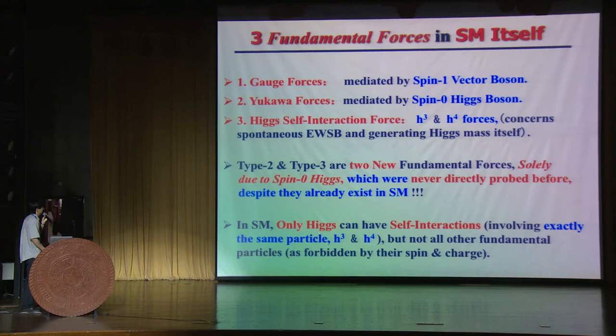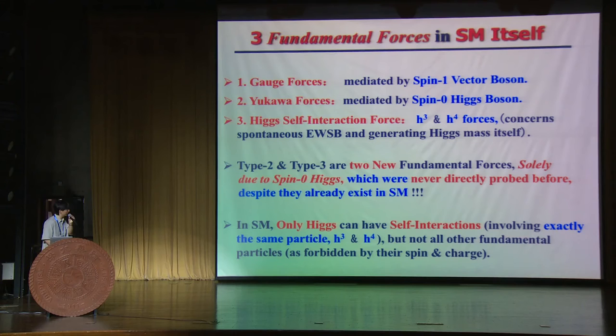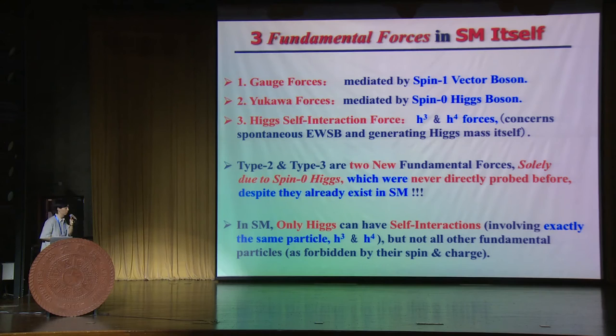It is important to note that the scalar Higgs boson is very unique because only spin-0 particles can have an exact self-interaction with itself, like H³ and H⁴. All other fundamental particles do not have this property — the gluons, W, Z, or even gravitons are forbidden by their spin and charge from having such self-interactions.